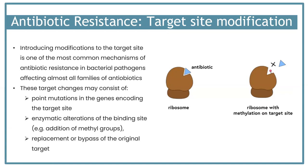Next we have target site modification. This can be done through enzymatic alteration of the binding site - for example, adding a methyl group - or through mutations in the genes encoding the target site. All of these can change the site where the antibiotic binds. Even just adding a methyl group means the antibiotic wouldn't be able to bind any longer, so in this case it's not able to bind to the ribosome and protein synthesis would continue without the antibiotic being able to work.